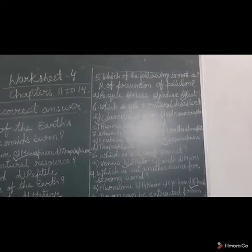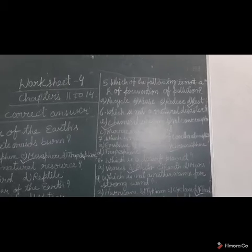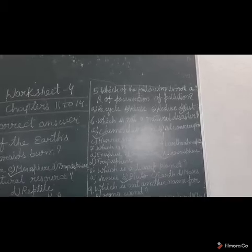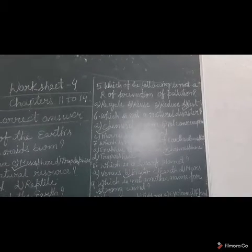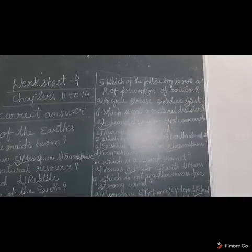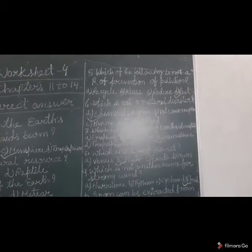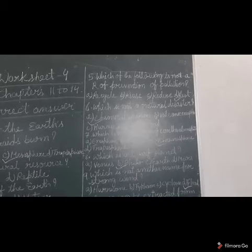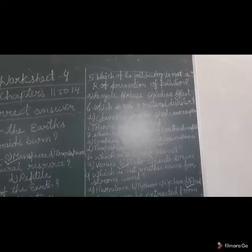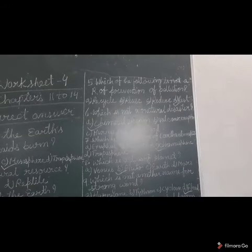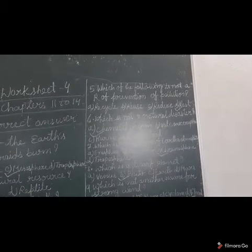Now come to question number 5, which of the following is not a R of prevention of pollution? Options are recycle, reuse, reduce and rest. As we know, 3 Rs are reduce, reuse and recycle. So rest is not the prevention of the pollution.